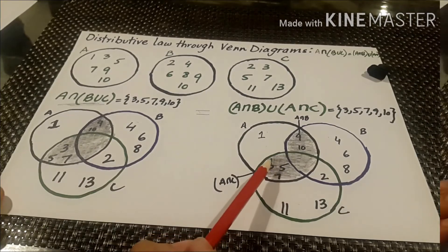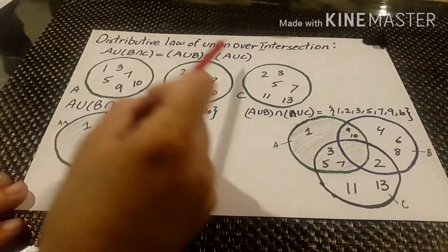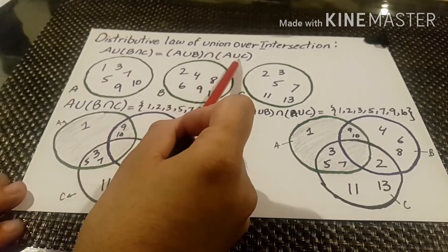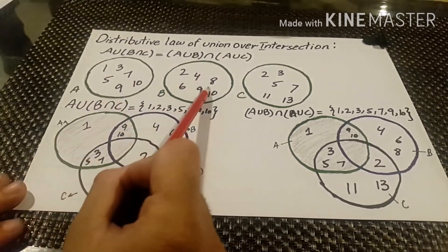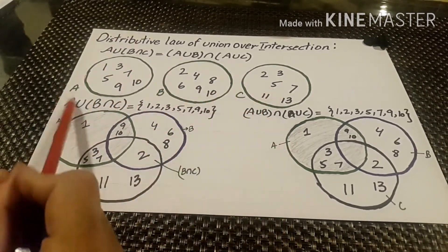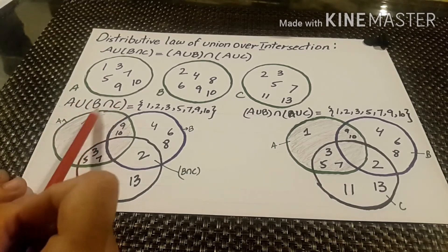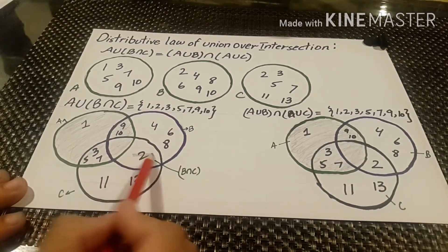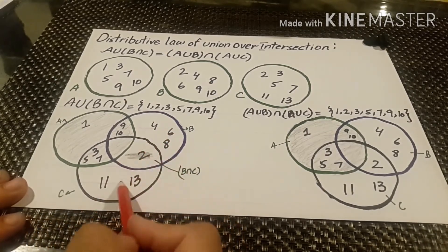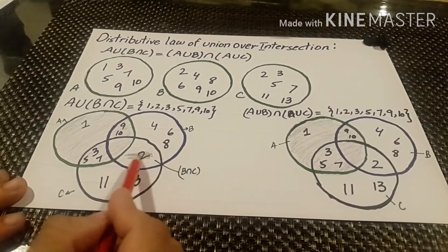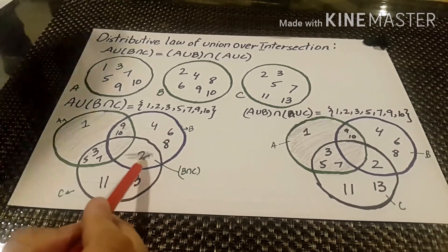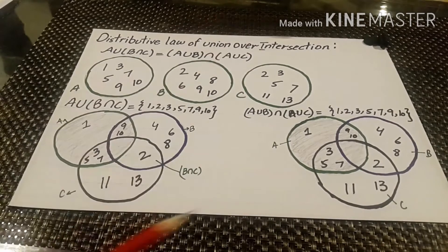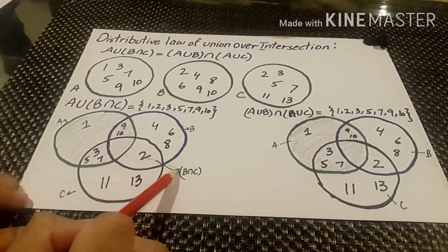Now the distributive law of union over intersection: A union (B intersection C) is equal to (A union B) intersection (A union C), where A, B and C are the three sets. First we calculate A union (B intersection C). We calculate B intersection C — the common values of B and C — that is 2. This portion in the Venn diagram is B intersection C.